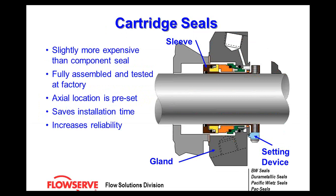How do you get around that? Simple — cartridge seal designs. A cartridge seal is a seal in a package, slightly more expensive because it includes a sleeve and a gland. They are all-in-one units, fully assembled and tested at the factory, with the axial location already preset. All you have to do is put it on the shaft, build the pump to its specs, tighten the seal gland to the desired torque settings, lock the sleeve to the shaft, remove the setting devices, and it's ready to go. This greatly saves on installation time, reduces mistakes, and greatly increases reliability.